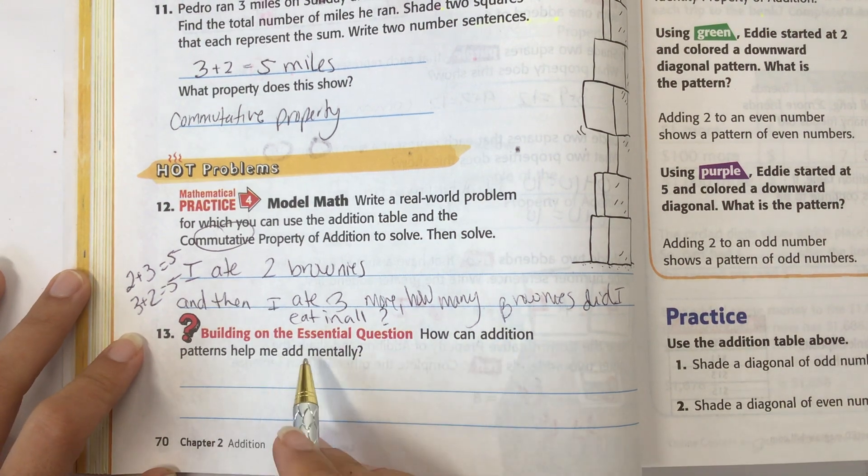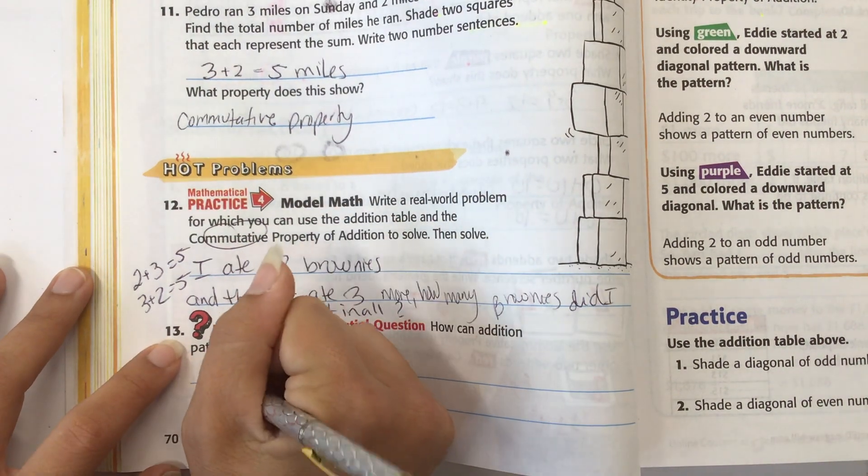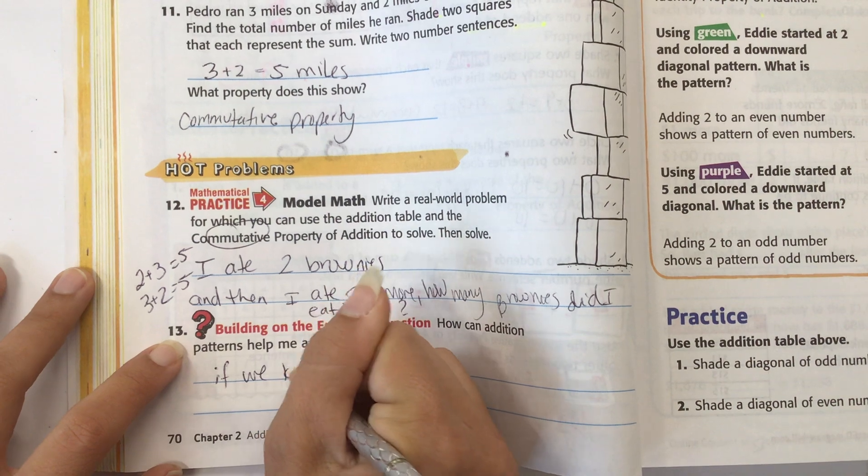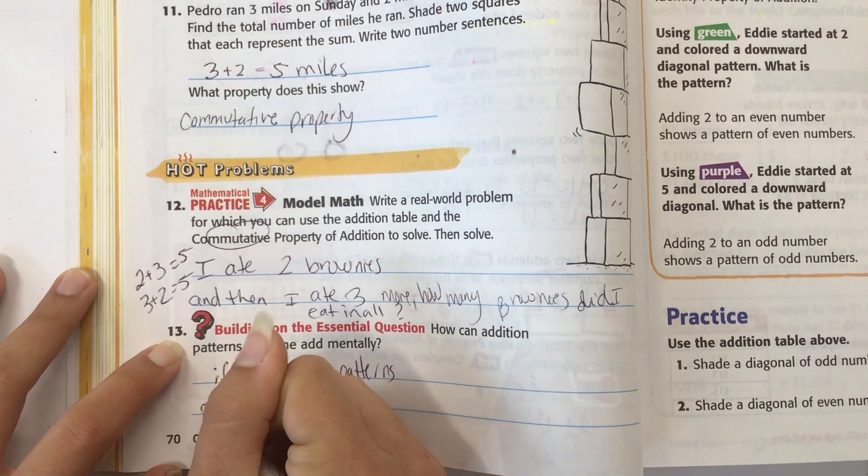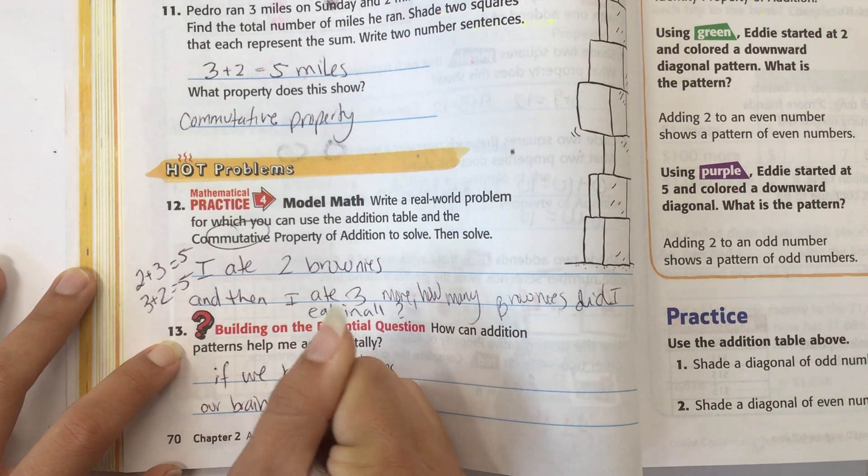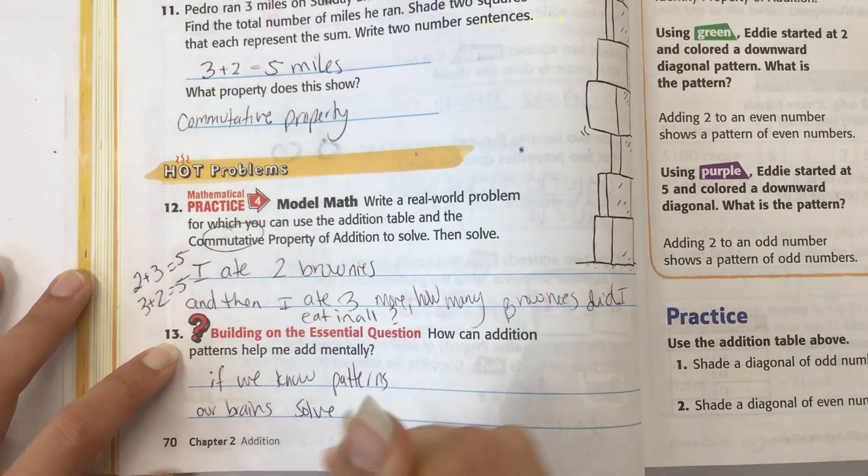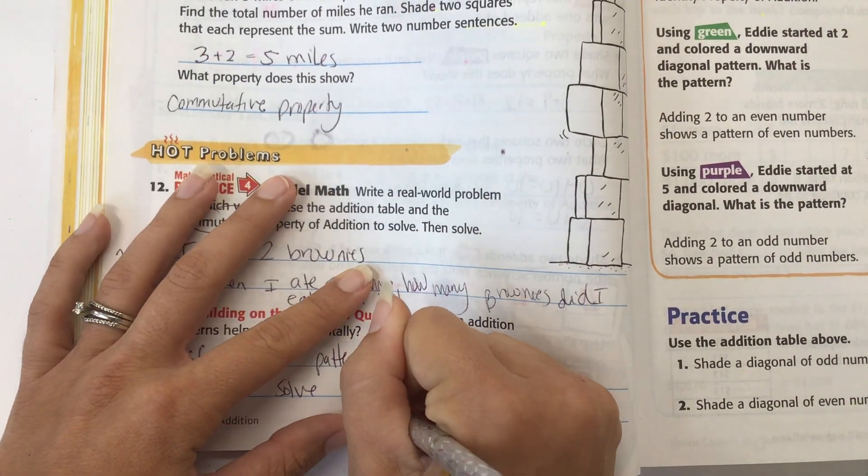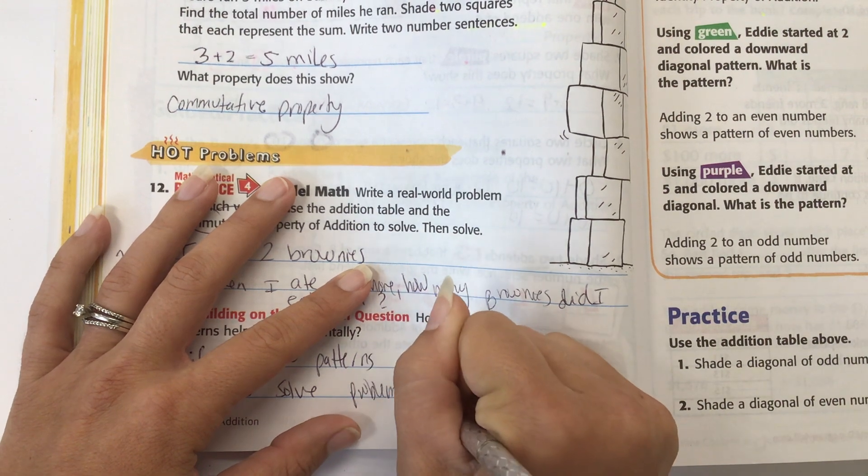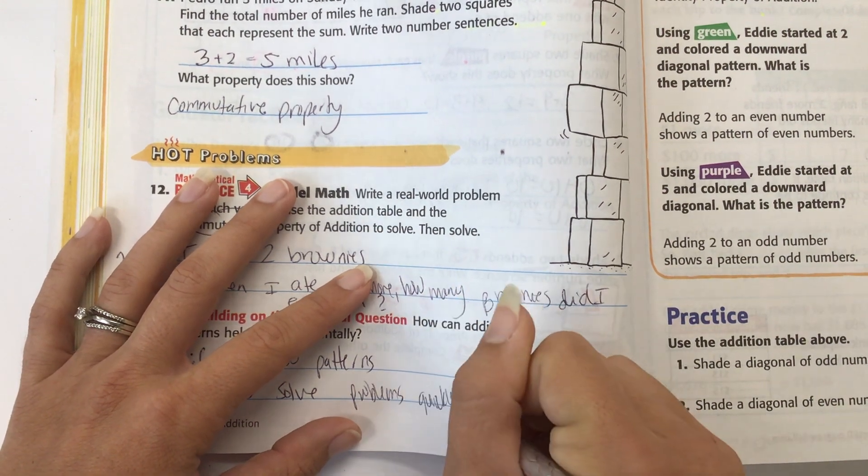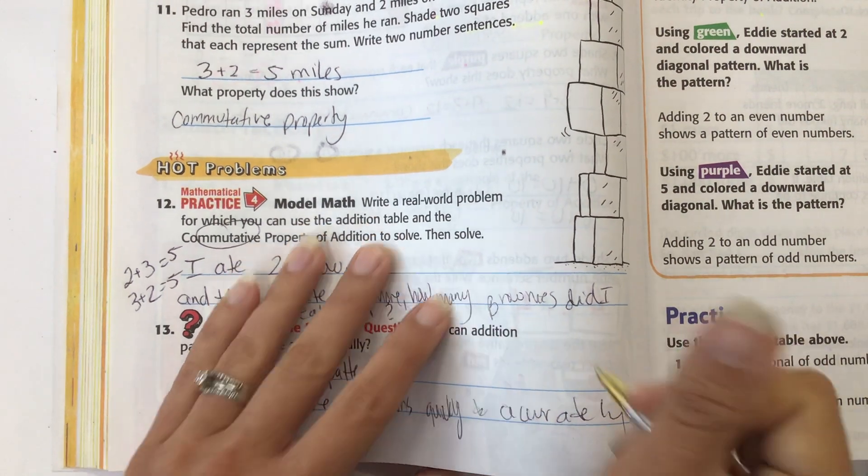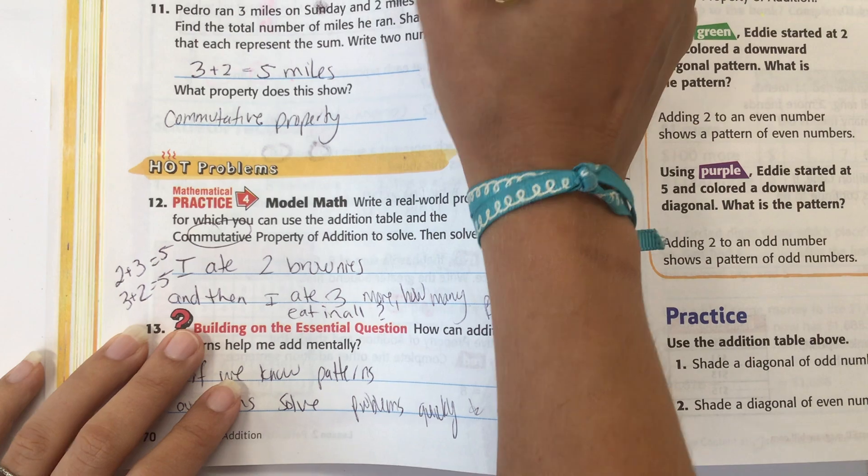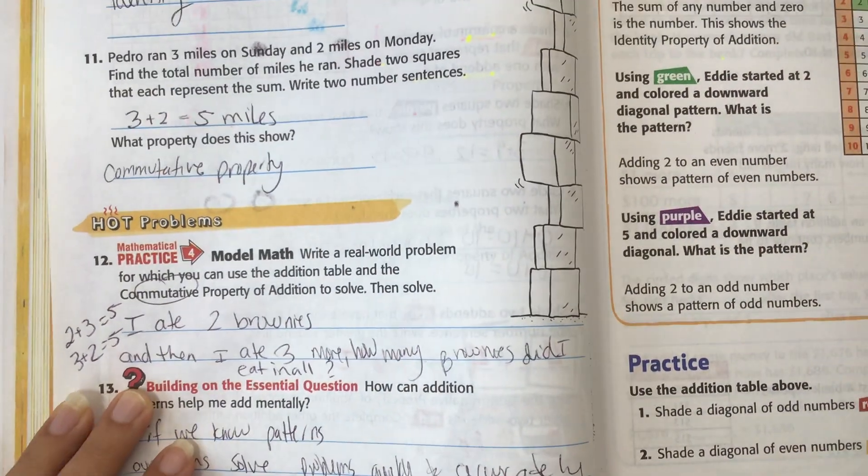How can addition patterns help me add mentally? Basically, if we know patterns, our brains solve problems quickly and accurately. When you know that two plus three is five, you know that three plus two is five. That's a pattern.